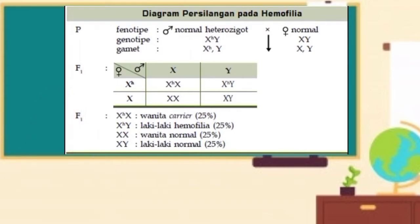Gen hemofilia terletak pada kromosom X dan sering ditandai dengan lambang X^H, huruf X sebagai penanda jenis kromosom, huruf H sebagai penanda gen hemofilia. Jika wanita memiliki salah satu kromosom X yang mengandung gen hemofilia atau genotif X^H-X, maka ia akan menjadi pembawa atau carrier. Wanita dengan kedua kromosom X mengandung gen hemofilia, genotif X^H-X^H, akan meninggal atau letal saat dilahirkan. Seorang laki-laki yang menderita hemofilia adalah laki-laki yang memiliki kromosom X mengandung gen hemofilia atau genotif X^H-Y.